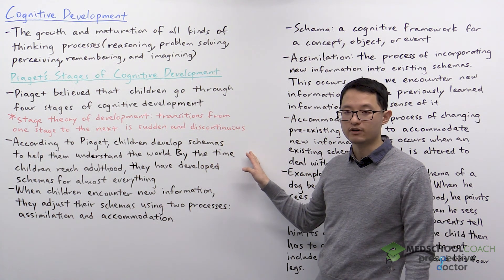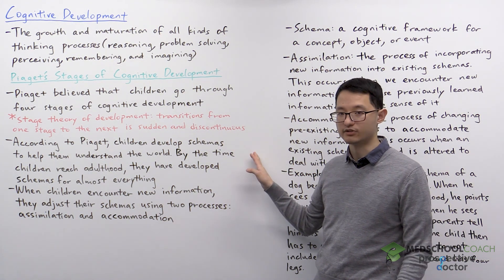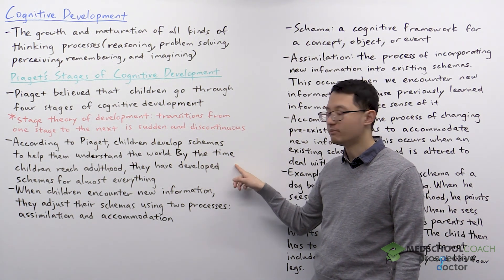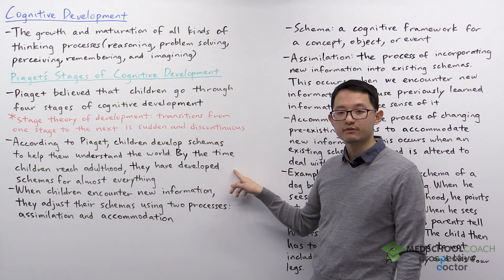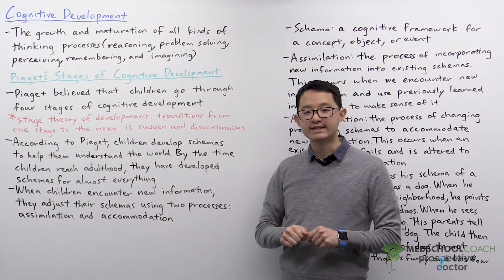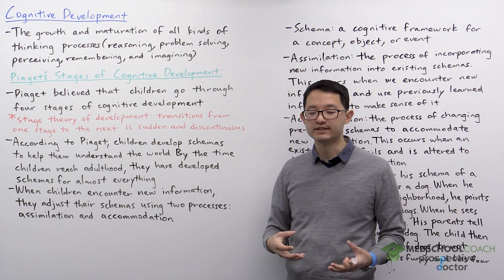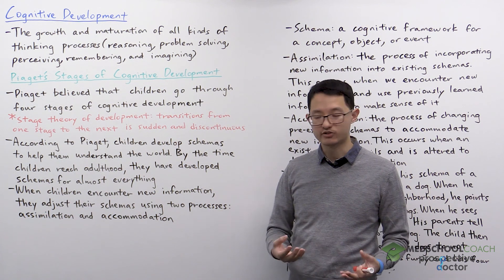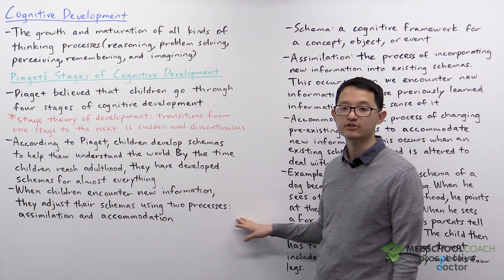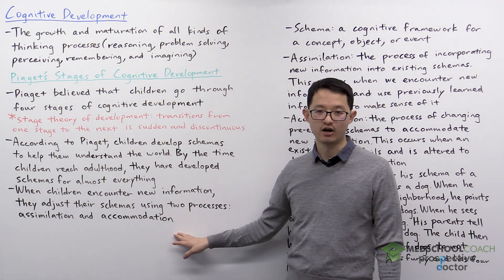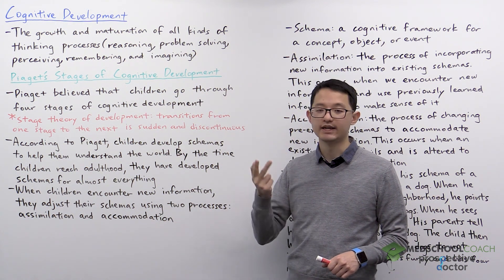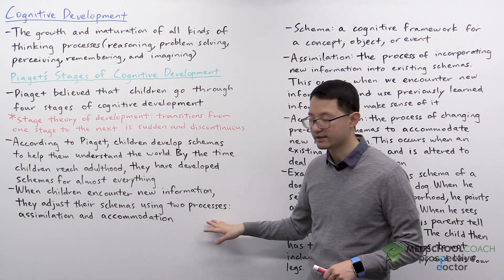When Piaget described his theory of cognitive development, he used a number of terms that you need to know for the exam. According to Piaget, children develop schemas to help them understand the world. By the time they reach adulthood, they have developed schemas for almost everything. These schemas are not permanent or fixed — it's possible for them to be changed. When children encounter new information, they adjust their schemas using two processes: assimilation and accommodation. So there are three key terms here: schemas, assimilation, and accommodation.